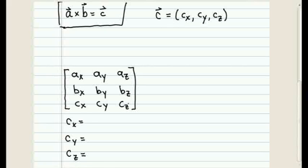Now in order to compute the cross product, we begin as follows. Find the row and column that are occupied by the first component of the unknown vector CX and begin by crossing them off.